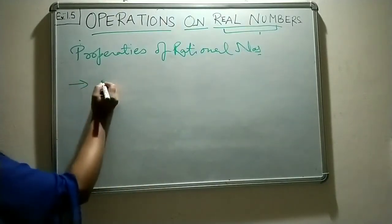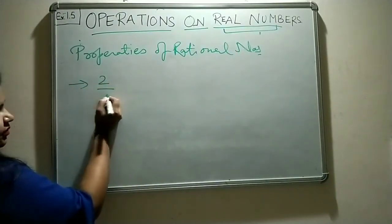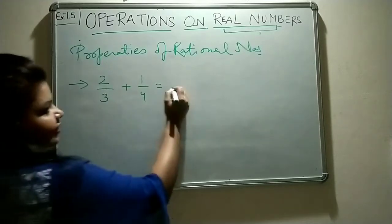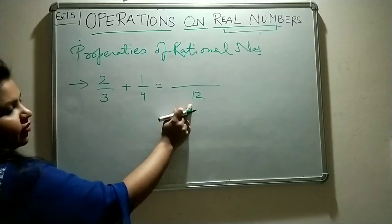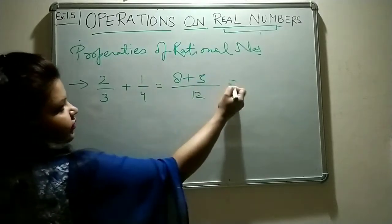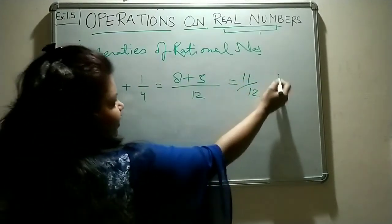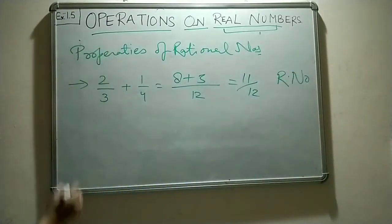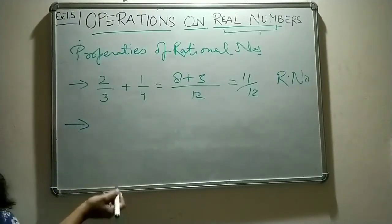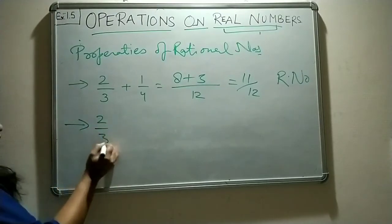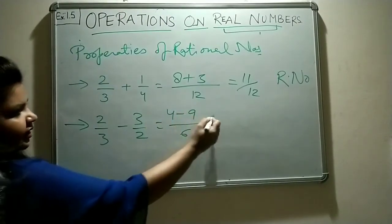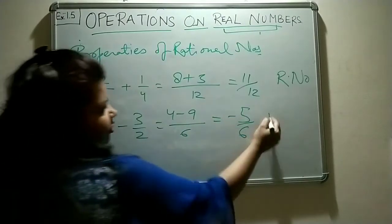In the case of addition, when we have two rational numbers — suppose 2/3 plus 1/4 — we take the LCM, which is 12. Then (12÷3)×2 = 8 and (12÷4)×1 = 3, giving us 11/12, which is a rational number. In the same way, when we subtract two rational numbers, suppose 2/3 minus 3/2, the LCM is 6, giving 4 minus 9, so the answer is −5/6, which is also a rational number.